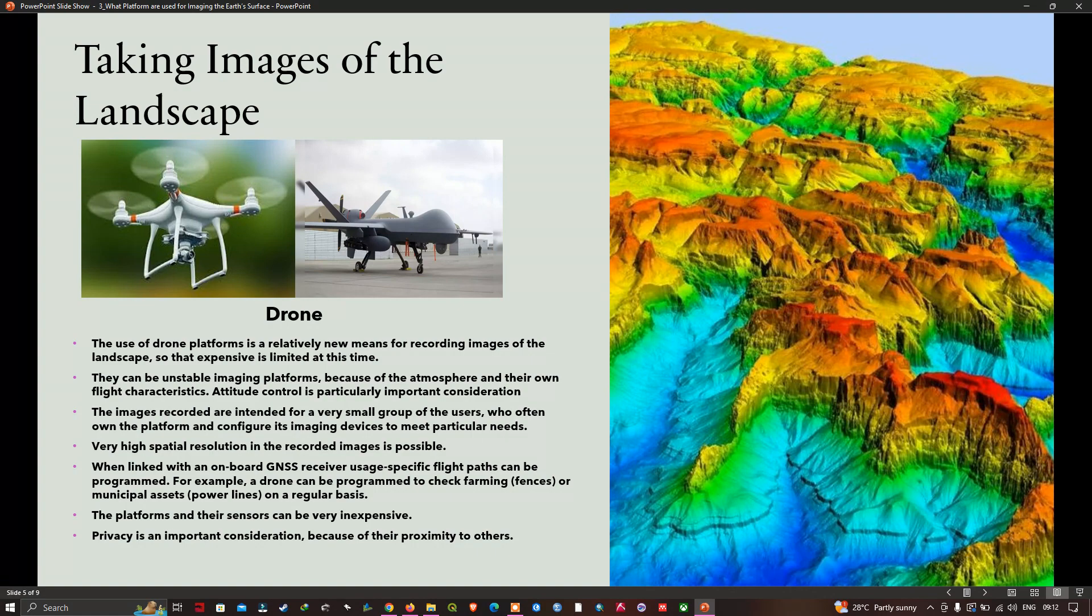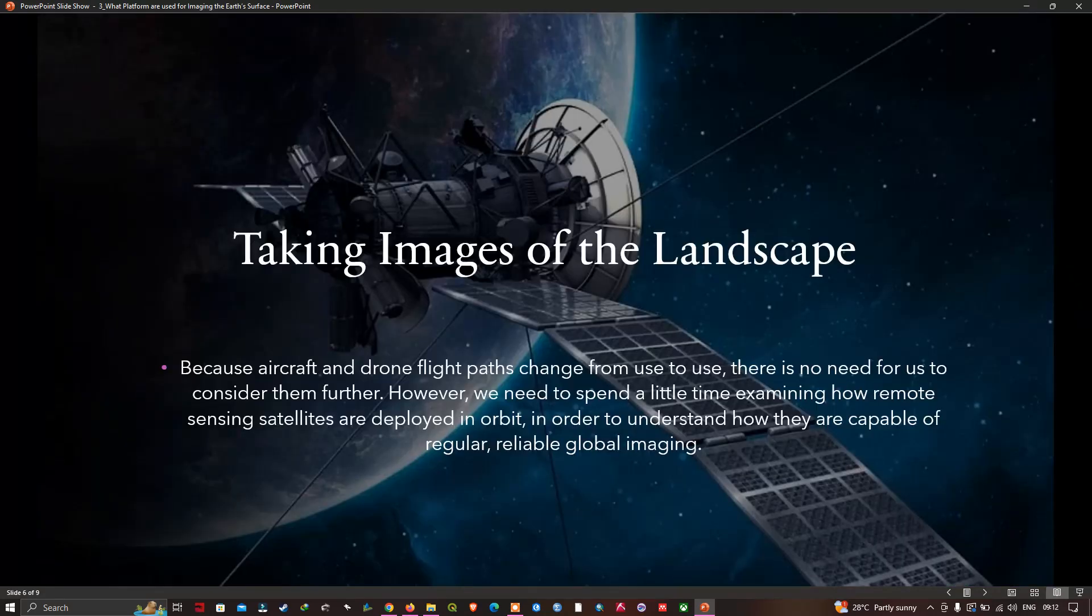We now need to understand a bit more about the orbital characteristics of satellites when used as remote sensing imaging platforms. Of particular importance is how we can arrange a satellite in orbit so that it can be used to image all of earth's surface in a particular time frame and do so repetitively.